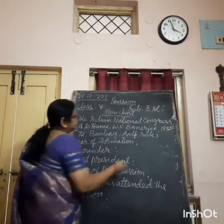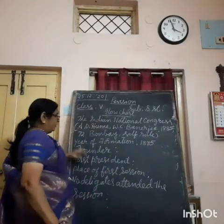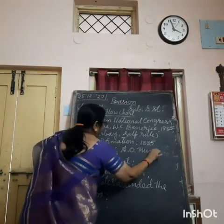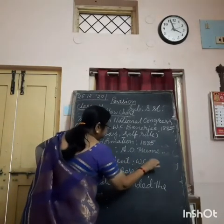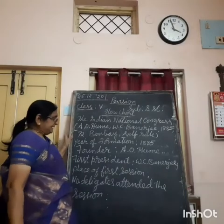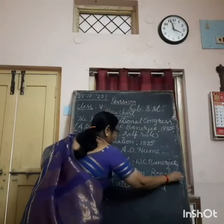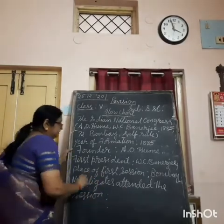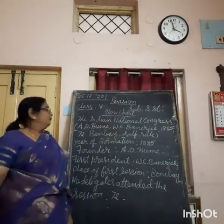Year of formation: it is 1885. If you get the month, it is December 1885. Founder: A.O. Hume. First president: W.C. Bannerji was the first president. Place of first session: where the first session was held — it was Bombay. Then number of delegates: how many members first attended this meeting — only 72 people. This is how you have to complete the flowchart.